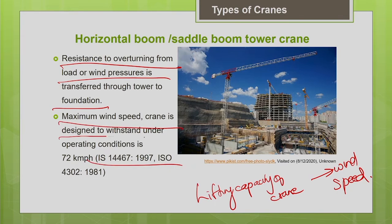As per the IS code, the maximum wind speed the crane is designed to withstand under operating conditions is 72 km/h. Beyond this, crane operation should be stopped. Many crane accidents happen due to high wind speed. When the wind is high, you should release the slewing brake and allow the boom to swing in the direction of the wind; applying the brake can result in damage.